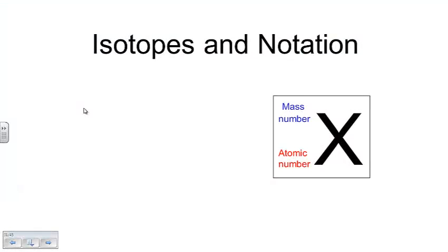Hi ladies and gentlemen, this is Mr. Workman and I'm just going to go through a quick explanation of what isotopes are and how we can do what's called isotope notation to indicate how the number and type of subatomic particles can change in different isotopes.